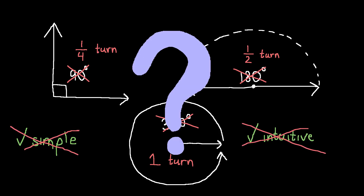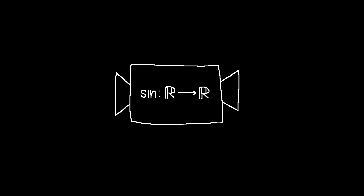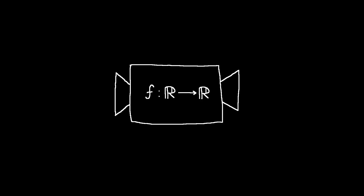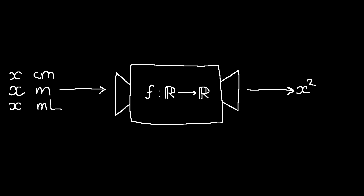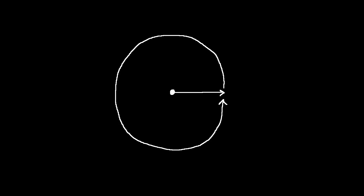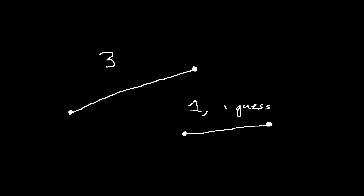Why? It's because as a function of a real number, sine should be able to take any plain old number and spit out another. In general, functions of real variables don't care about units. The function f such that f of x equals x squared doesn't care what units x has, if any — it will always spit out the same thing for the same number. Why should the sine function be any different, having specific units baked into its inputs? The challenge, then, is to describe angles in a way that doesn't rely on any fancy units like degrees or turns, just like how lengths can be abstractly measured using numbers and nothing else.